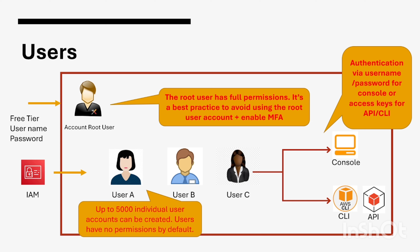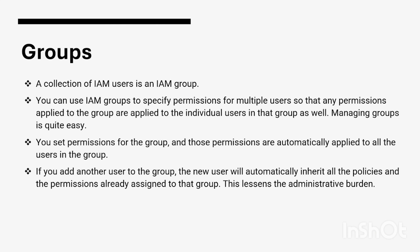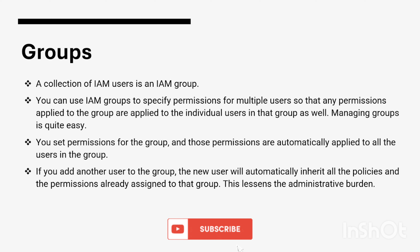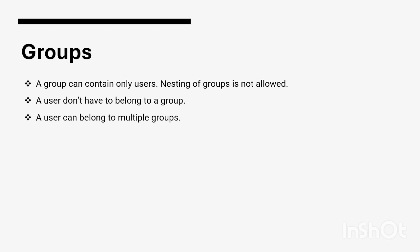The next component is groups. A collection of IAM users is an IAM group. You can use IAM groups to specify permissions for multiple users so that any permission applied to the group is applied to the individual users in the group as well. Managing groups is quite easy — you set permissions for the group and those permissions are automatically applied to the users in that group. If you add another user to the group, the new user will automatically inherit all the policies and permissions already assigned to that group, which lessens the administrative burden.